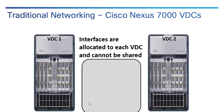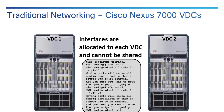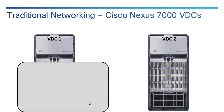Once that's done, interfaces can be allocated to each VDC and those interfaces cannot be shared — they're dedicated to the VDC they're a part of, depending on the generation of line card. There are even port assignment rules. For example, VDC1 gets ports 1 through 10 and VDC2 gets ports 11 through 20, and they become dedicated to that particular VDC. Once the VDC is operational, you can log into it and take care of all the configuration individually for that VDC.